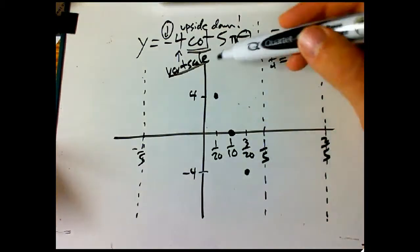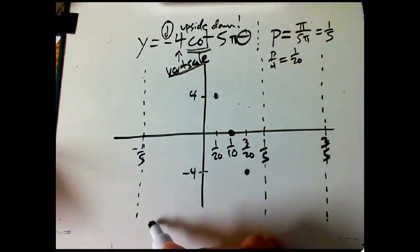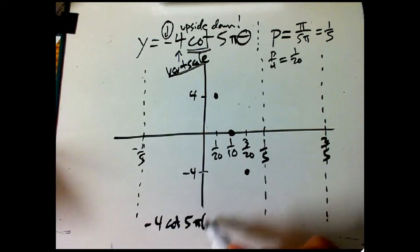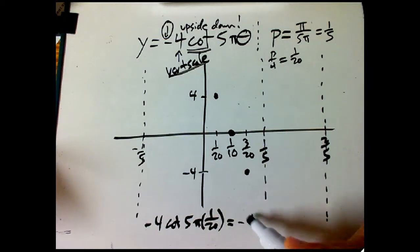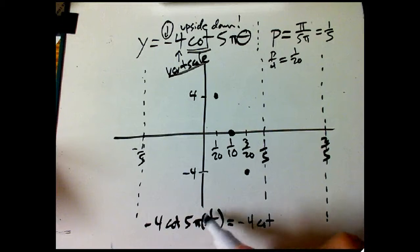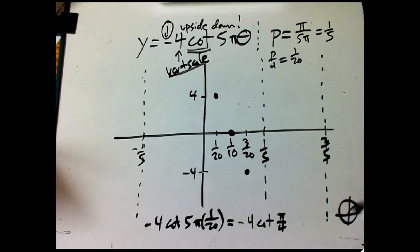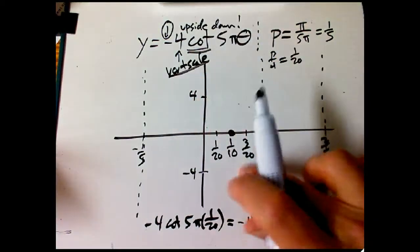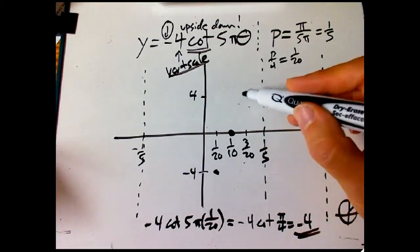Let's check that quickly. Plug in θ = one-twentieth: minus 4·cotangent(5π × 1/20) = minus 4·cotangent(π/4). Pi over four is the 45-degree position on the unit circle, where tangent and cotangent are both one. So we get minus four. That confirms the upside-down orientation — I said it's upside down and then momentarily forgot!